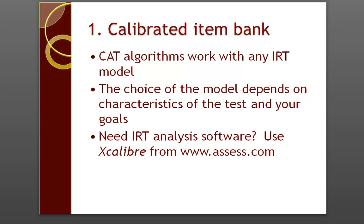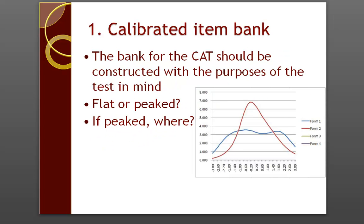CAT algorithms will work with any IRT model if you're able to program it into the general algorithm. The choice of model depends upon the characteristics of the test and your goals and how the test will be used. If you need IRT analysis software, I recommend Excalibur from Assessment Systems Corporation, located at www.assess.com. When working on your item bank, it should be constructed with the purposes of the CAT in mind. If the purpose of the test is to measure examinees across a very broad spectrum of ability, you need items across a very broad spectrum of difficulty. If the purpose is to differentiate examinees near a certain cutoff, you need a lot of items near that cutoff and a peaked test information function.